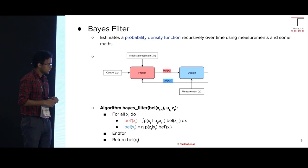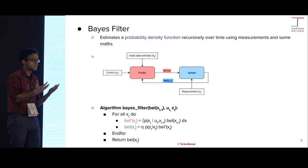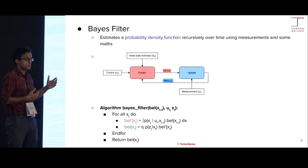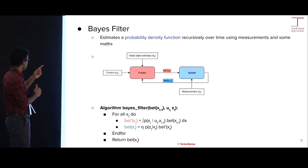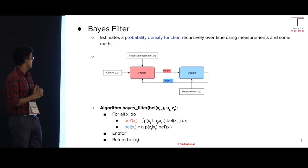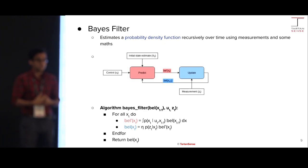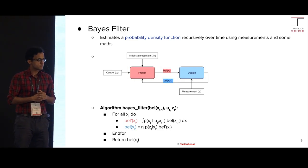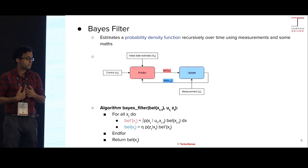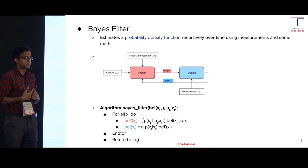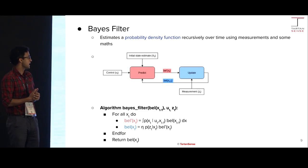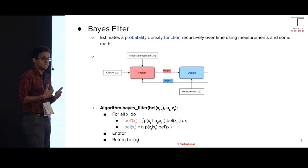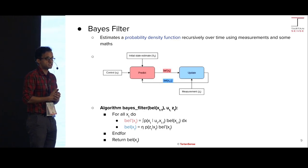Bayes filter helps us estimate a probability density function using a series of measurements and maths recursively over time. Looking at the block diagram: Bayes filter and Kalman filter have two main steps — predict and update. Inputs to predict are the control (average speed of the robot) and the belief from the previous time step, bel(x_{t-1}). The prediction step uses the dynamic model to predict the state into the future, bel'(x_t). That becomes input to the update function, which also takes in measurements — IMU and encoders. We fuse prediction with measurement in the update step and output a more accurate state estimate, which feeds back to predict and the cycle repeats.